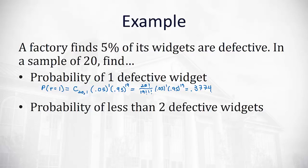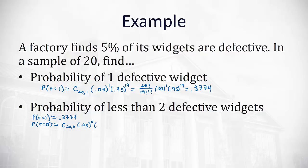If I want the probability of less than two defective widgets, less than two means I could have one defective widget or zero defective widgets. We already calculated the probability of one as 0.3774. We just need to calculate the probability of zero, which is a combination of 20 choose 0, times 0.05 to the zero power, times 0.95 raised to the 20th power.